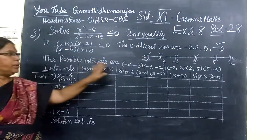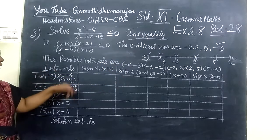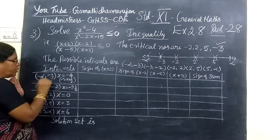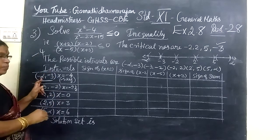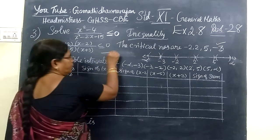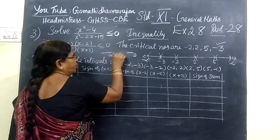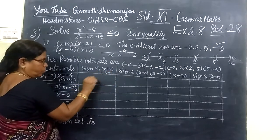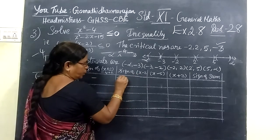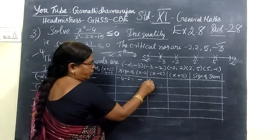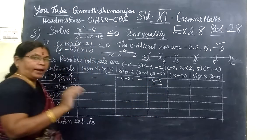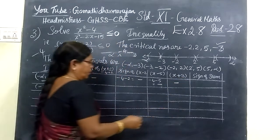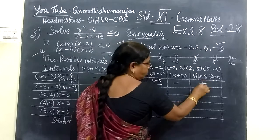In the last possible intervals we have written. For the interval minus infinity to minus 3, you can select any number — take minus 4. Substituting minus 4: (minus 4 + 2) gives a negative sign; (minus 4 - 2) gives a negative sign; (minus 4 - 5) also negative sign. We need only the sign. (minus 4 + 3) also negative. So four negatives — the product becomes plus.